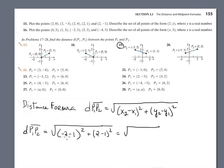This is negative 2 minus negative 1 equals negative 3. Negative 3 squared is 9. Plus 2 minus 1 is 1, and 1 squared is 1. The answer is radical 10.